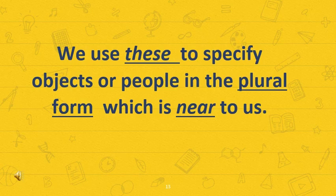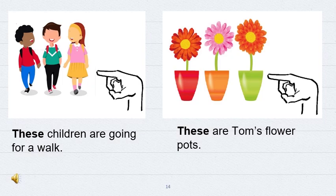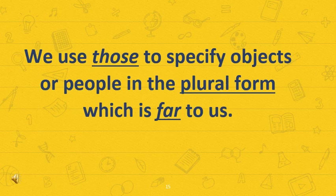For example, these children are going for a walk. As you can see, the pointed arrow is really near to these children. Now, let's talk about another one: these are Tom's flower pot. This has actually been specified, and the statement uses 'these' just because it's plural — there is no one pot, right? So we talk about 'these'.